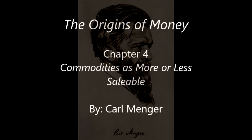If we call any goods or wares more or less saleable according to the greater or less facility with which they can be disposed of at a market at any convenient time at current purchasing prices, or with less or more diminution of the same, we can see by what has been said that an obvious difference exists in this connection between commodities. Nevertheless, and in spite of its great practical significance, it cannot be said that this phenomenon has been much taken into account in economic science. The reason for this is in part the circumstance that investigation into the phenomenon of price has been directed almost exclusively to the quantities of the commodities exchanged, and not as well to the greater or less facility with which the wares may be disposed of at normal prices.